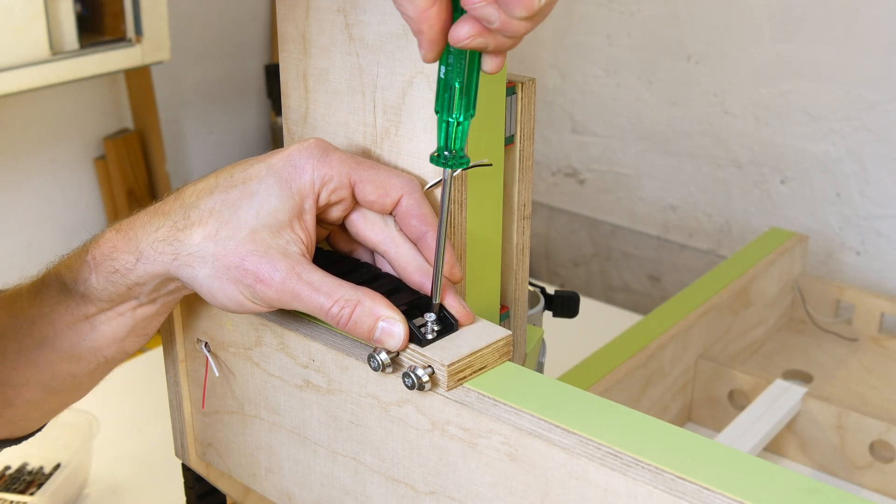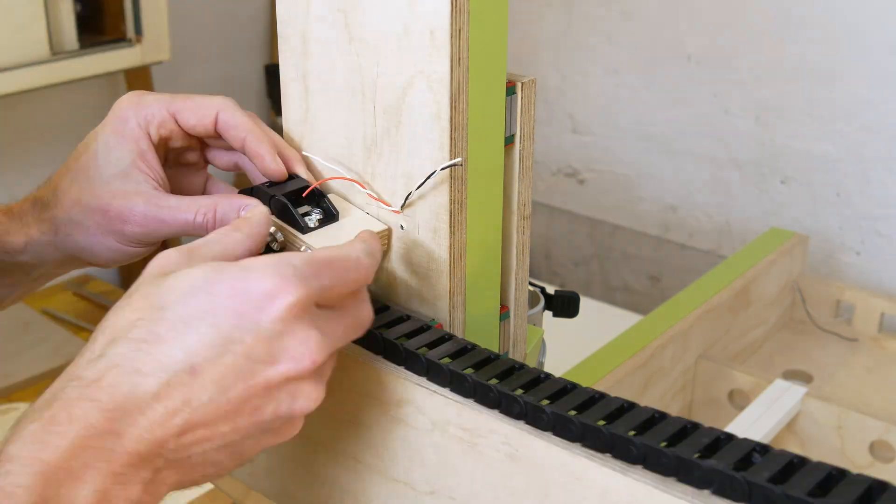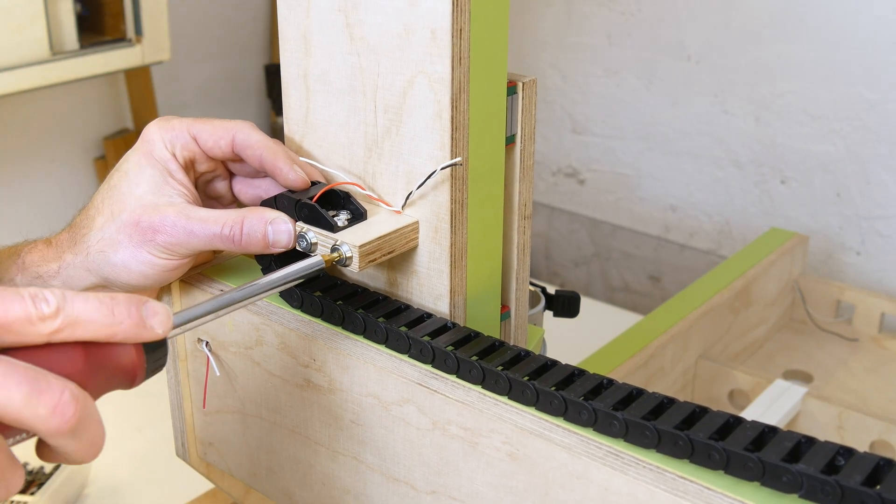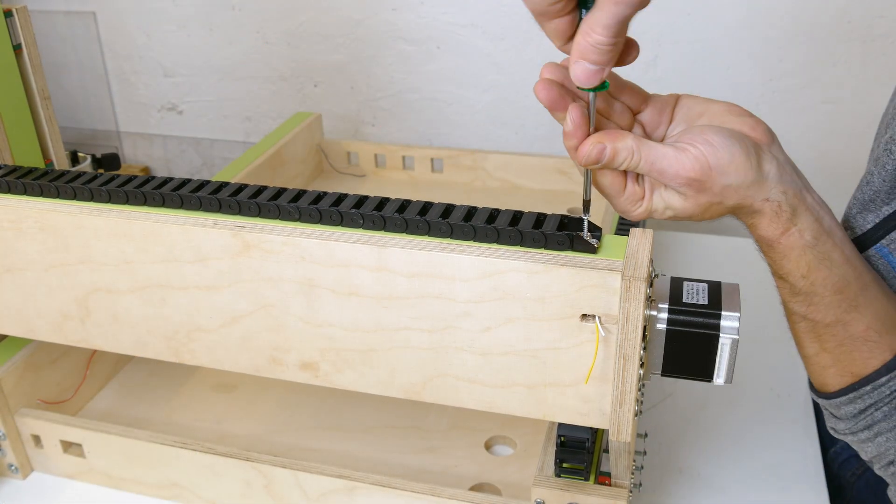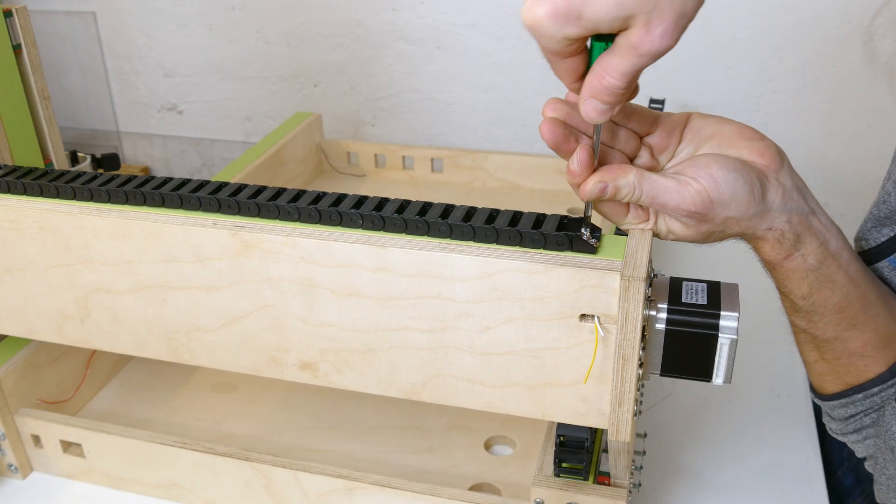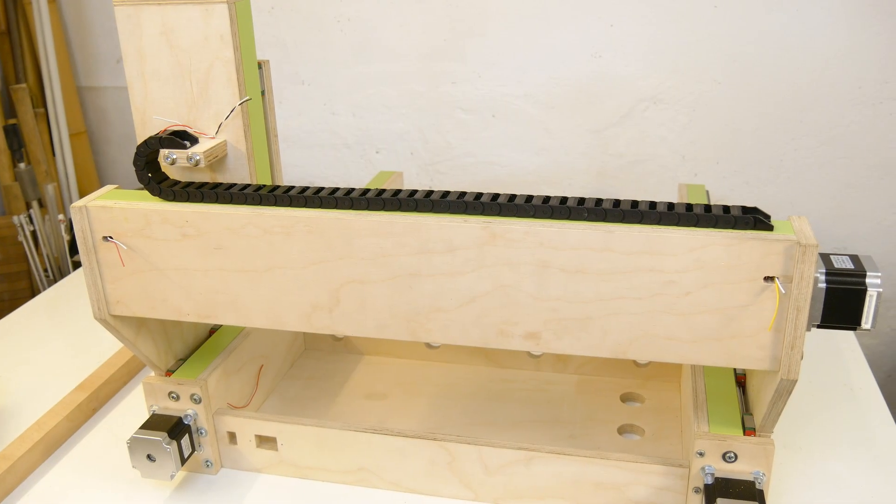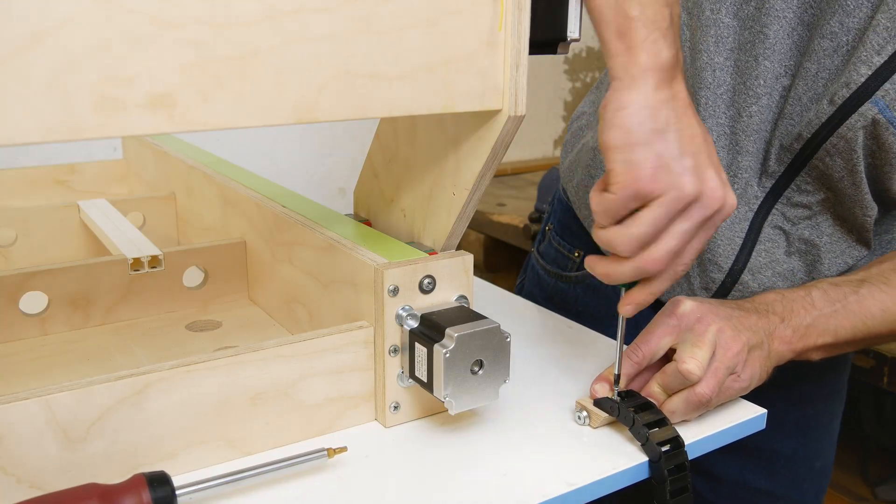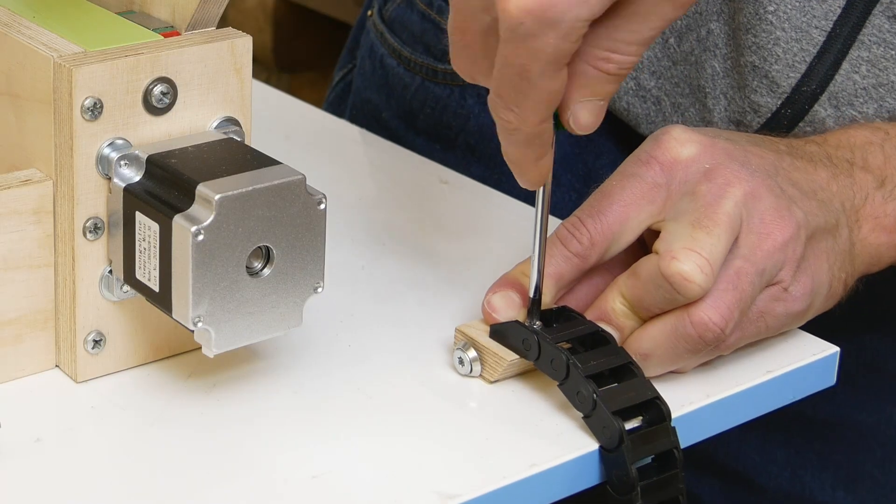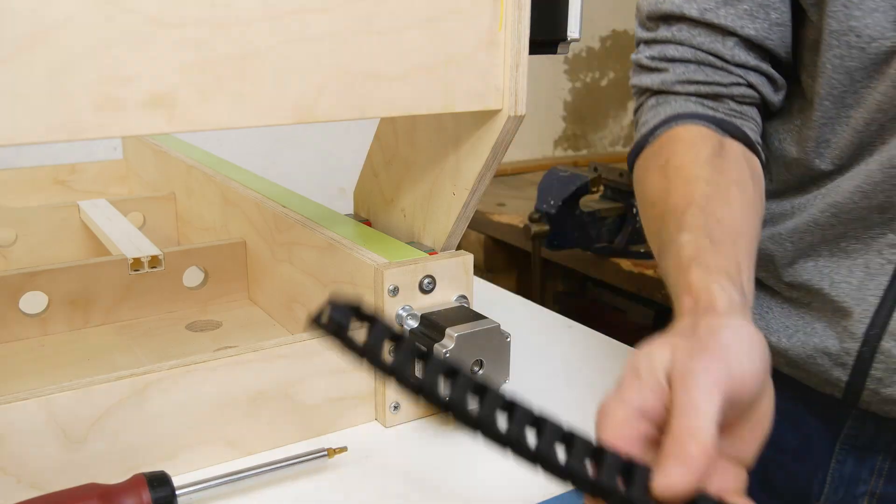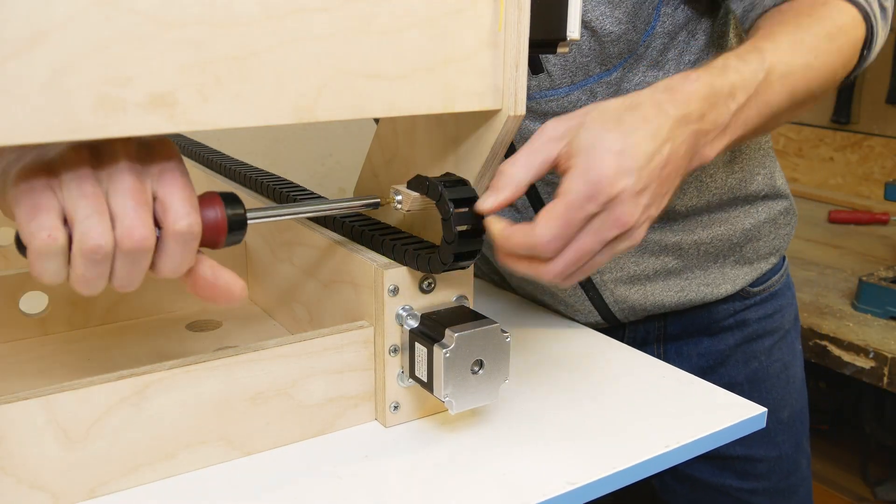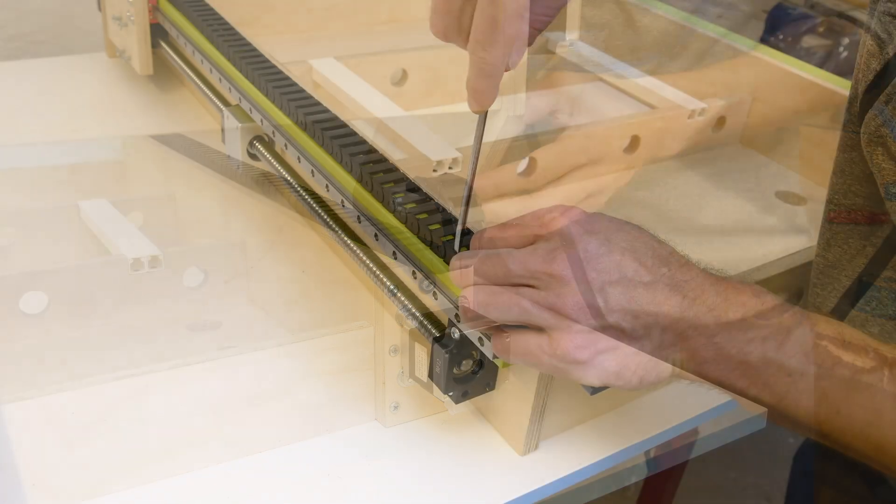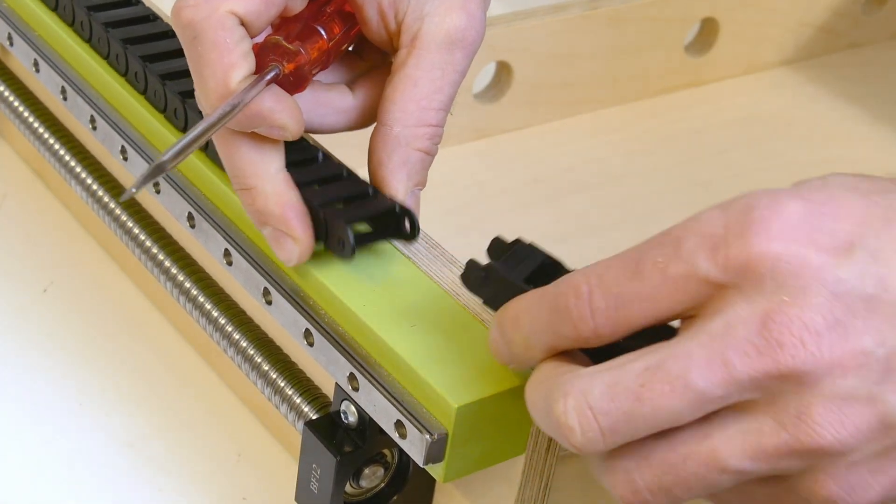On the now almost complete machine frame I installed the drag chains for the X and Y axis. I cut some plywood pieces to which I attached the drag chains. I screwed one piece to the back of the vertical axis, exactly below the hole through which I had already routed the cables of the limit switches. The other end was fixed as well. The other piece was screwed to the side of the gantry, with the drag chain running on top of the left side of the frame. The chain could be simply shortened to the required length by removing some of the chain links and reattaching the end piece.